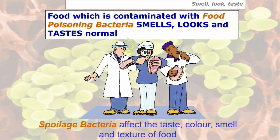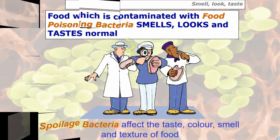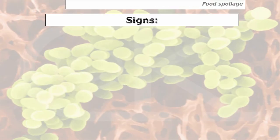There is another group of bacteria which does affect food and leaves different smells, colors, etc. They are called spoilage bacteria. So we have two types: food poisoning bacteria, which could kill you but don't affect the smell, look, or taste of food; and spoilage bacteria, which do affect the taste, color, smell, and texture of food but won't cause food poisoning.